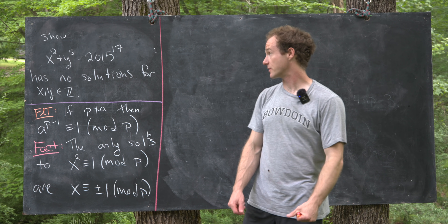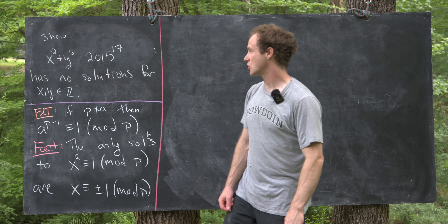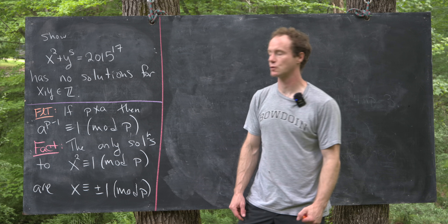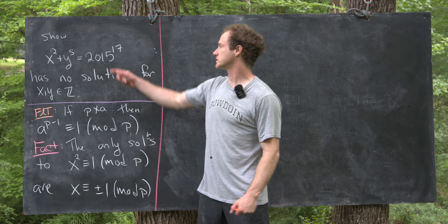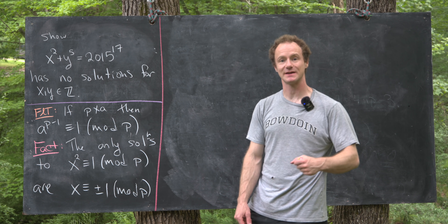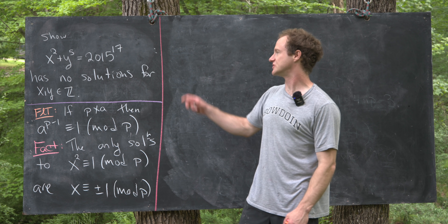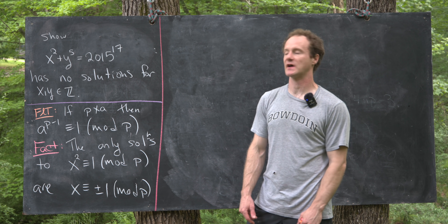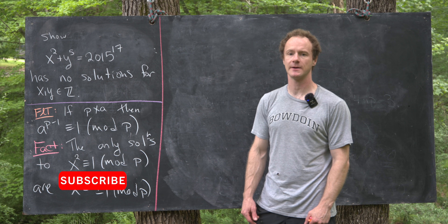Here I've got a nice and quick number theory problem for you. We want to show that x squared plus y to the fifth equals 2015 to the power 17 has no solutions for integer values x and y.